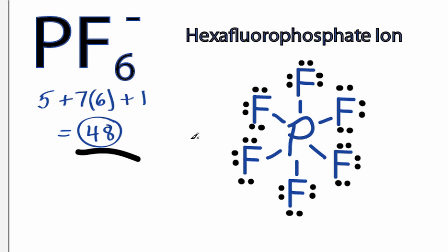If you were to look at the formal charges, you would find that phosphorus has a formal charge of negative 1. That makes sense because this is negative up here. So that's the Lewis structure for PF6 minus.